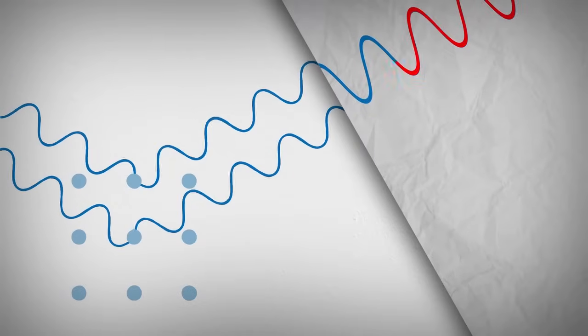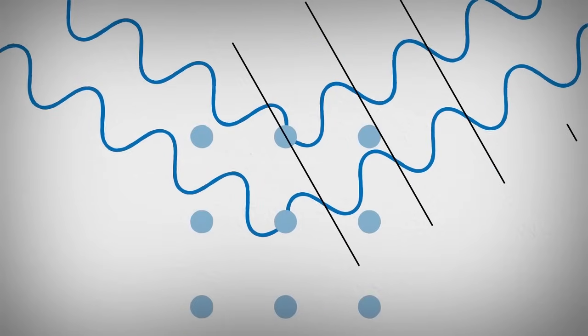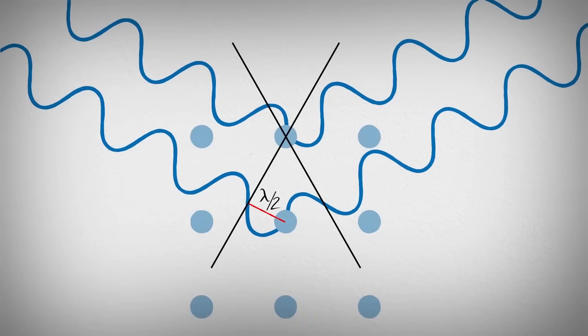In order for constructive interference to occur, the scattered waves must be in alignment, meaning that the second wave must travel a whole number of wavelengths. In this case, one half of a wavelength is traveled on the incident side, and one half on the scattered side, yielding one additional wavelength.